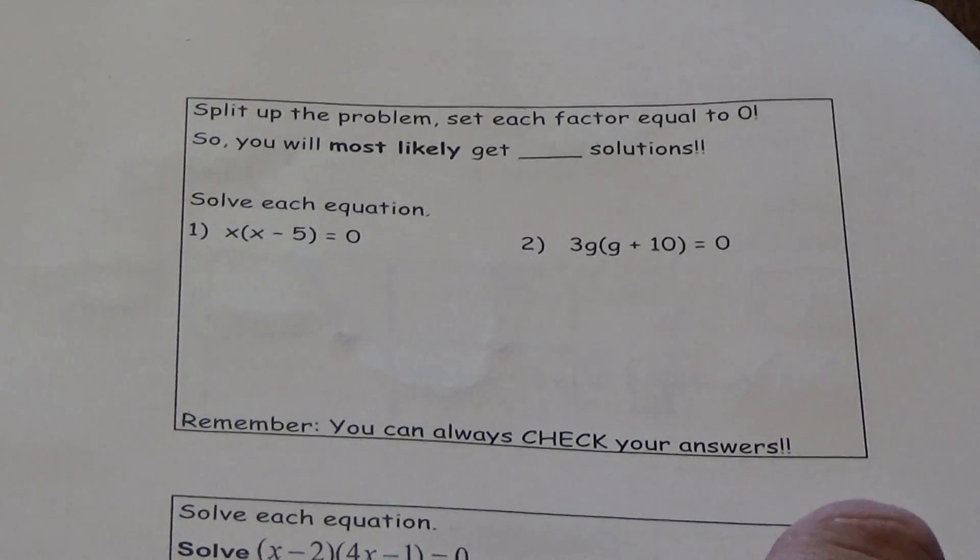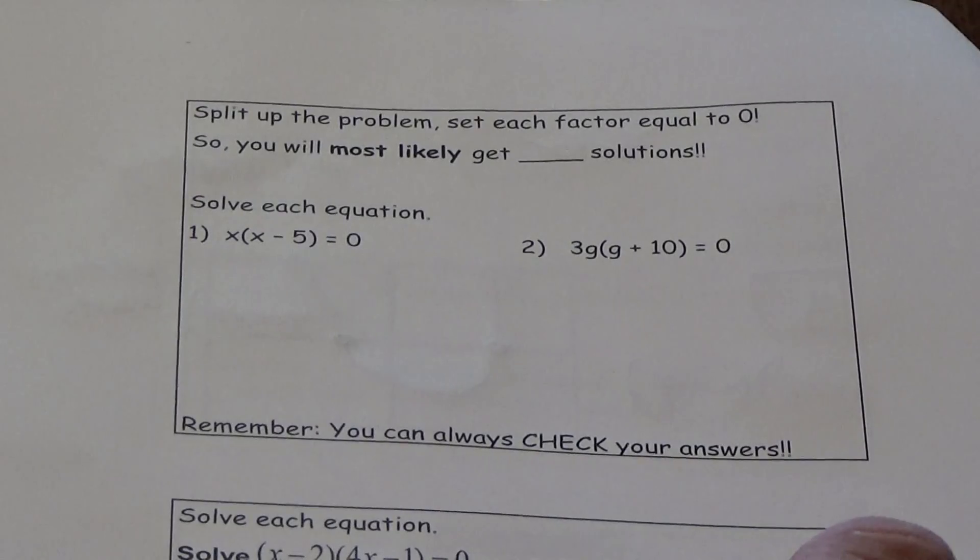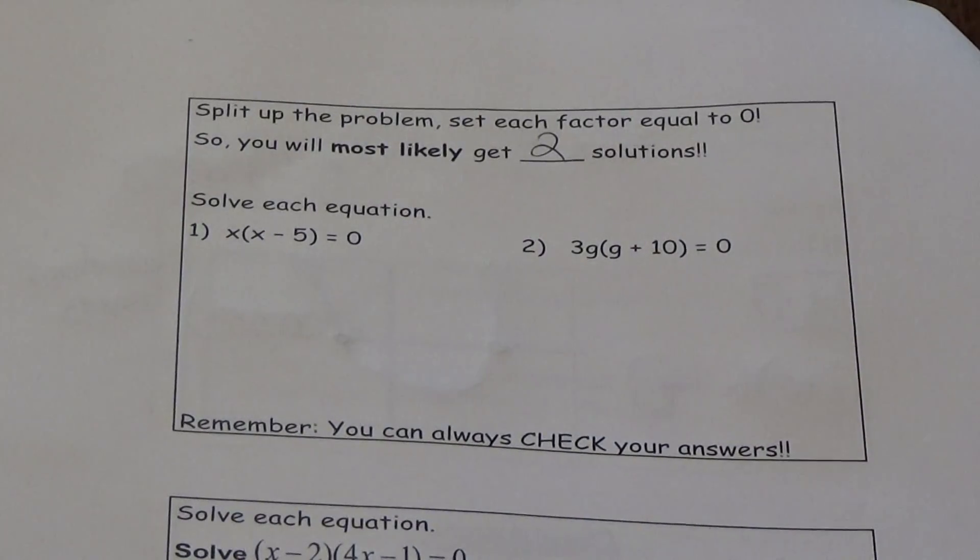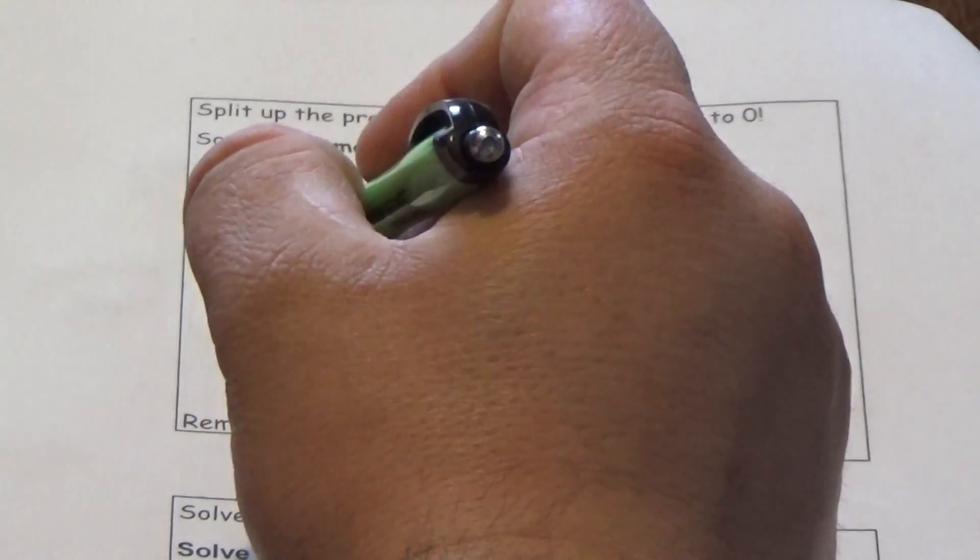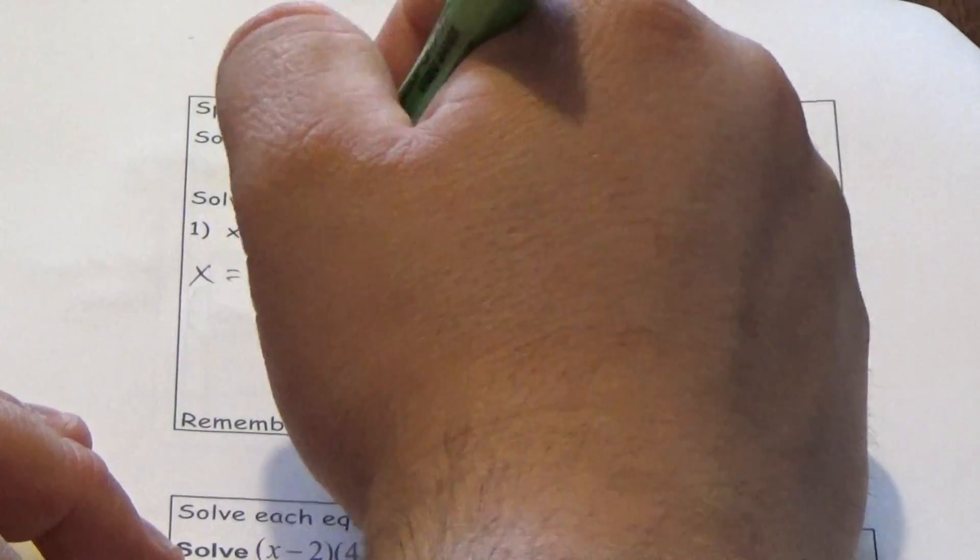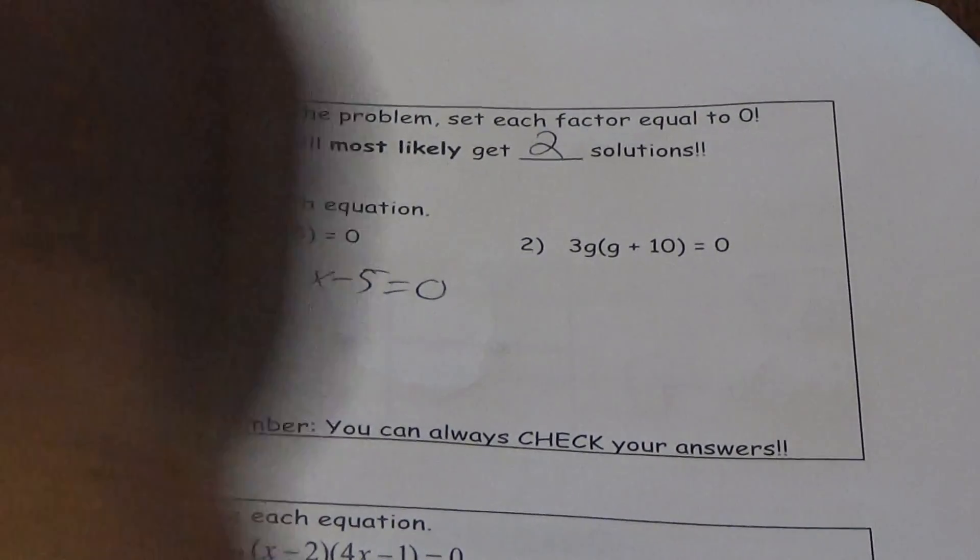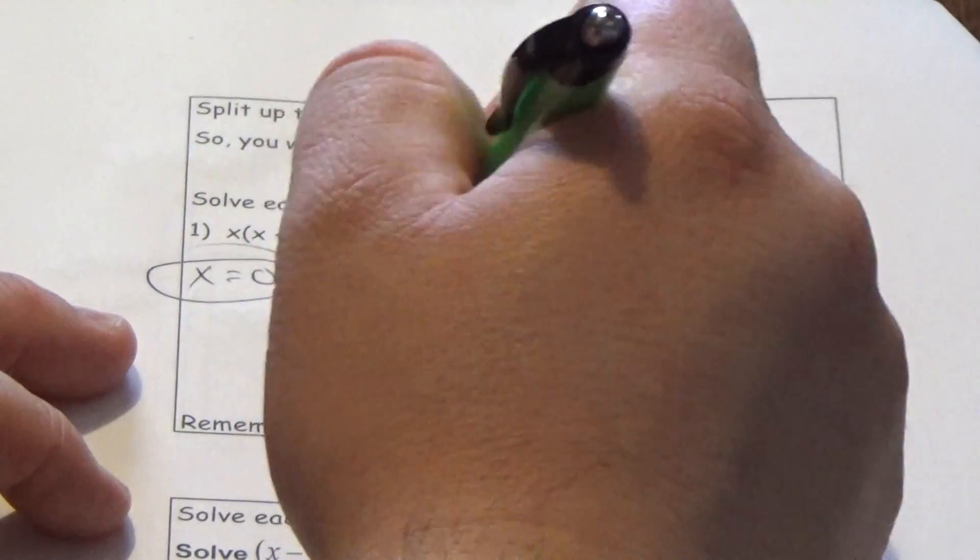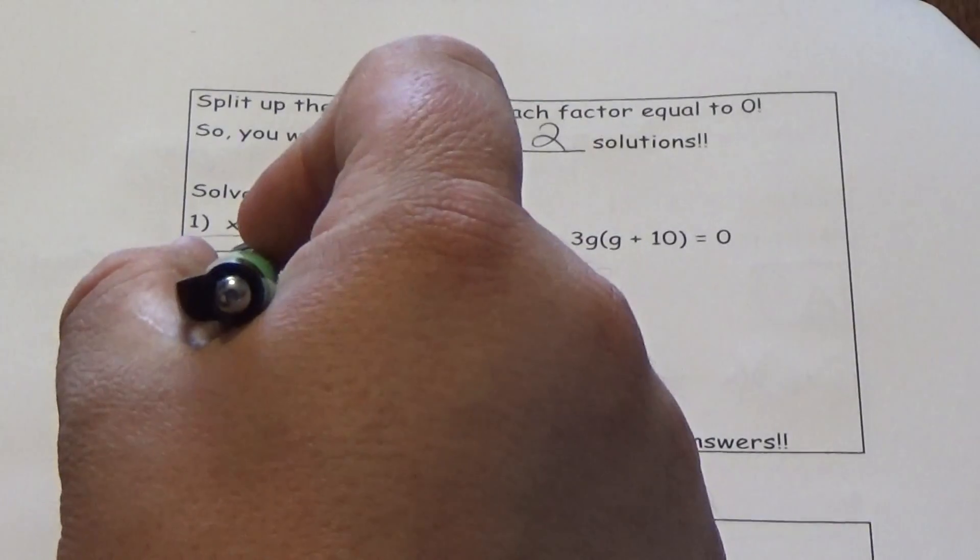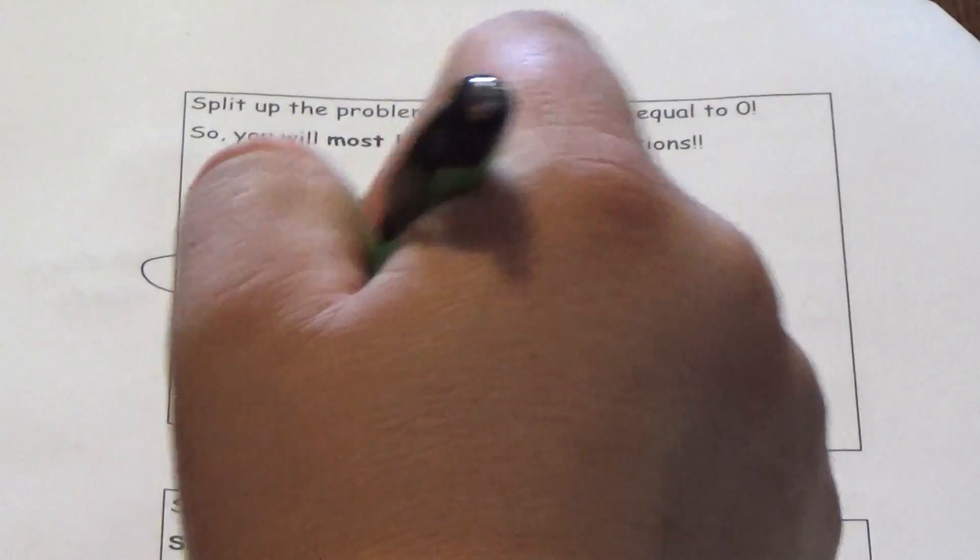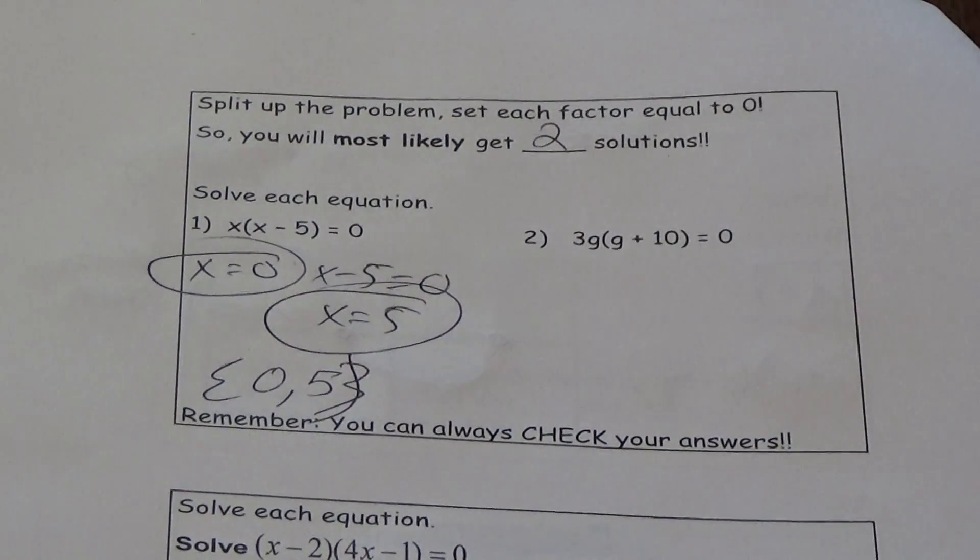When we're solving a quadratic equation, we can split the problem up and set each factor equal to 0, and we'll most likely get two solutions except for certain cases. When we have an equation like x times (x minus 5) equals 0, we set x equal to 0 and what's in the parentheses equal to 0. This one's already completed, and for this one we add 5 so x equals 5. Therefore the correct answers are 0 and 5, and notice how I put those in set builder notation so we keep them in order from smallest to largest.